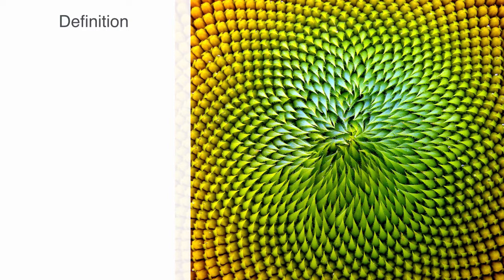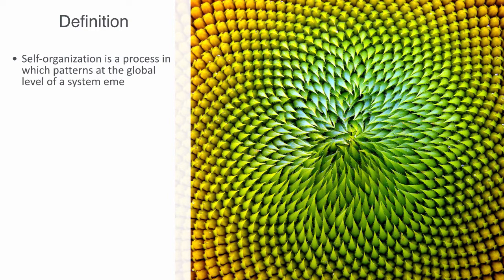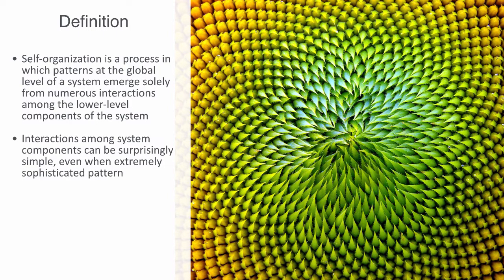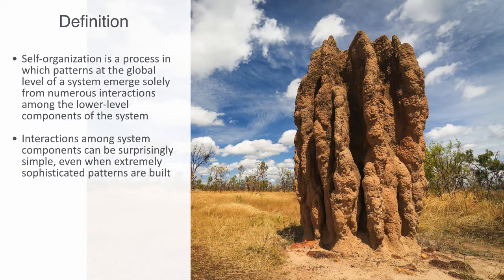Self-organization is a process in which patterns at the global level of a system emerge solely from numerous interactions among the lower-level components of the system. The rules specifying interactions among the system's components are executed using only local information without reference to the global pattern. What is also intriguing about this pattern formation in biological systems is the recent realization that interactions among system components can be surprisingly simple, even when extremely sophisticated patterns are built, such as the complex nests of termites, the coordinated movement of birds in a flock, or even human consciousness.